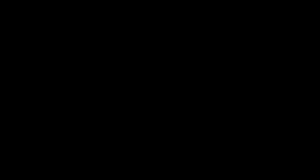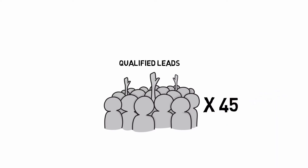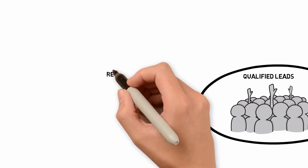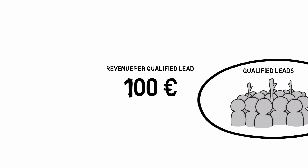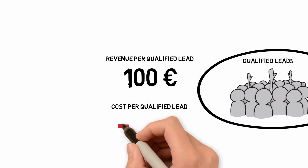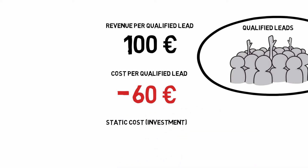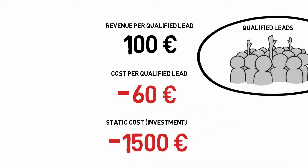Let's put on our math goggles to calculate it. Let's say that you made a marketing campaign and got some qualified leads — 45 of them to be exact. Each one of them is worth a hundred euro. However, each one also costs you 60. And then you invested in promotional material, which is a static cost of 1500.